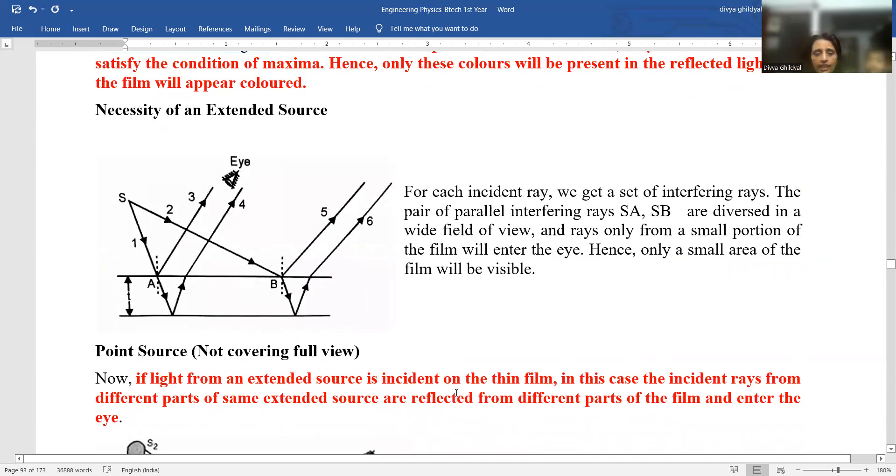Another very favorite question of section A is, why is an extended source of light necessary in fringe pattern? Necessity of extended source of light. See, look at this ray diagram here.